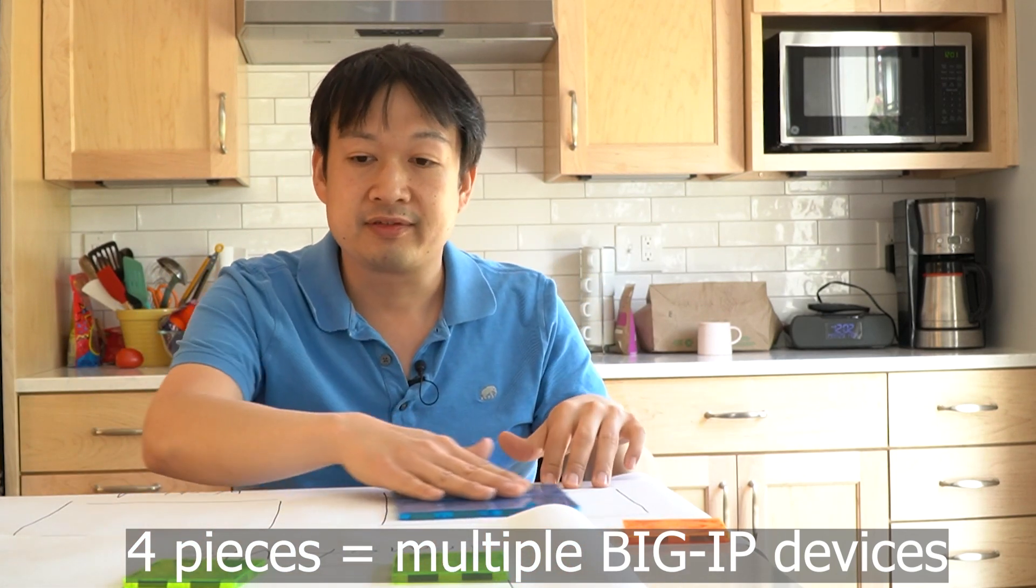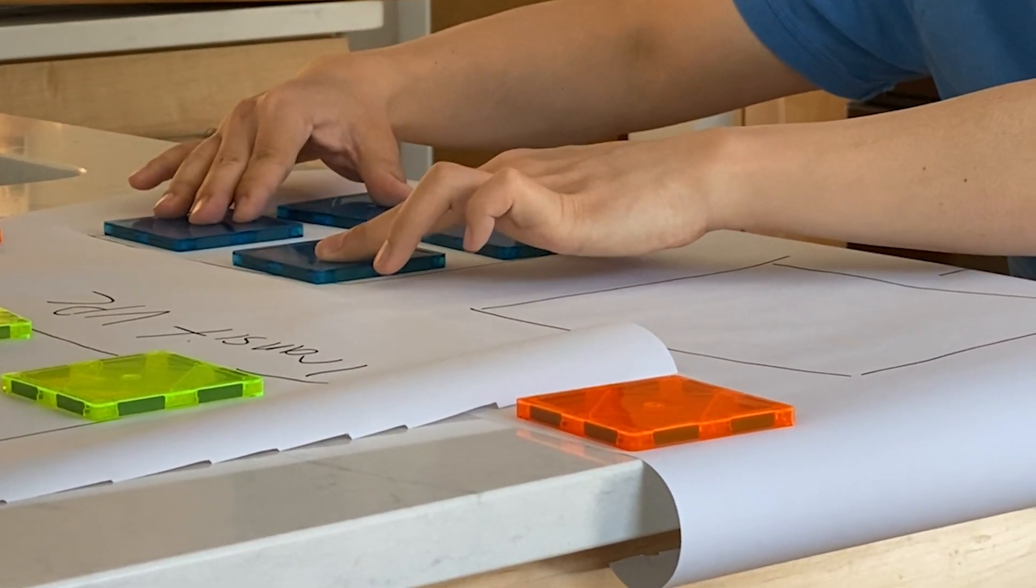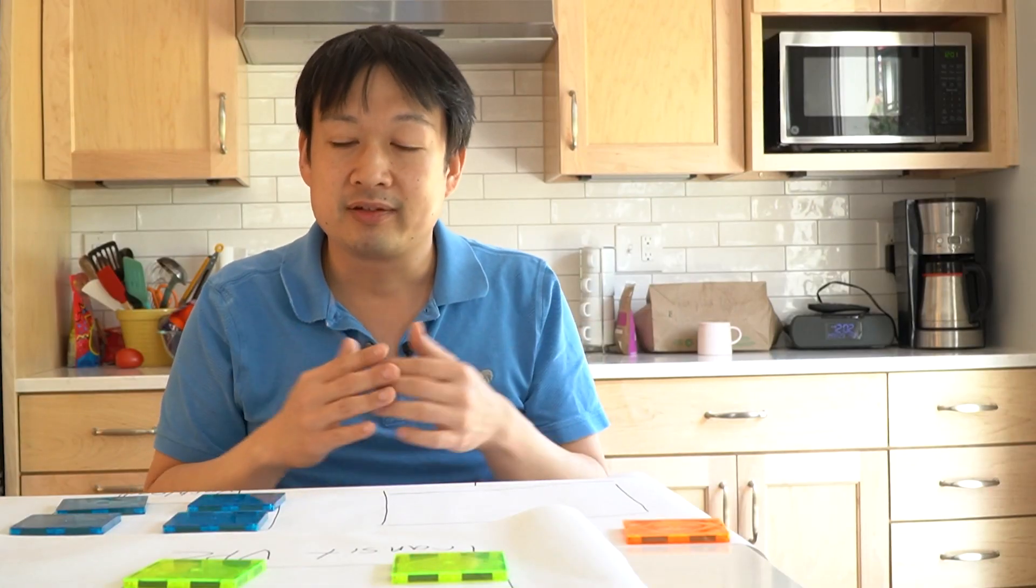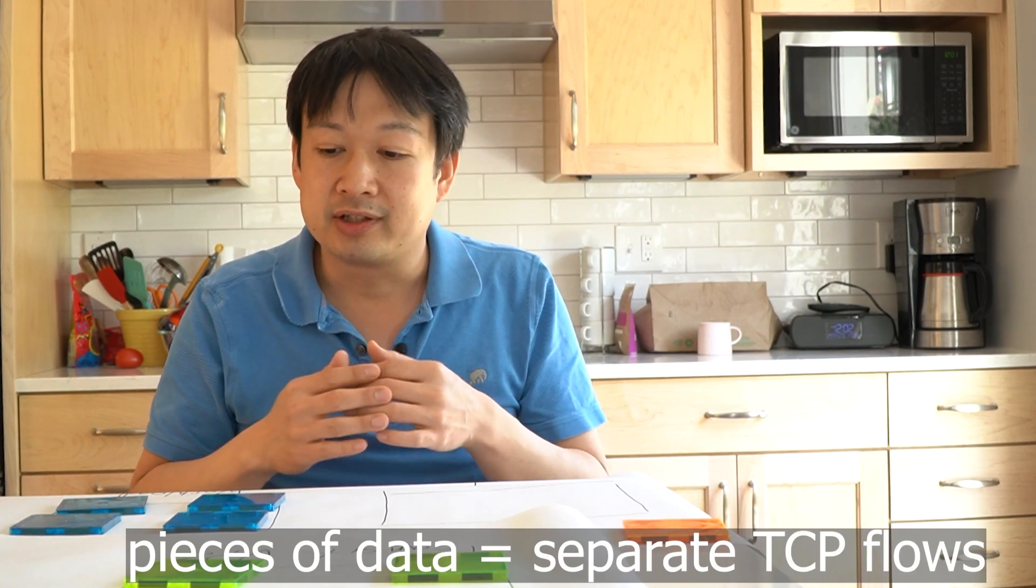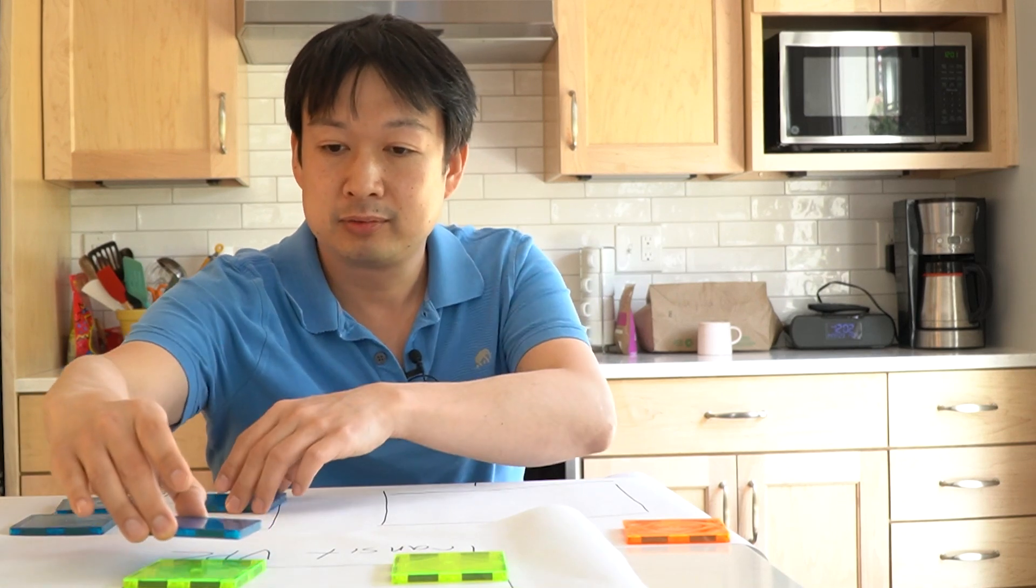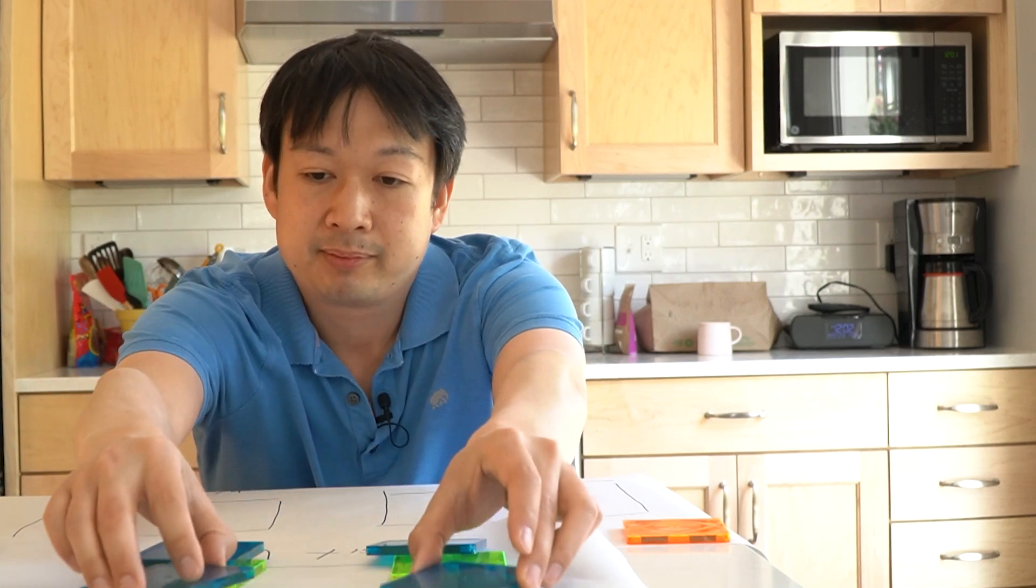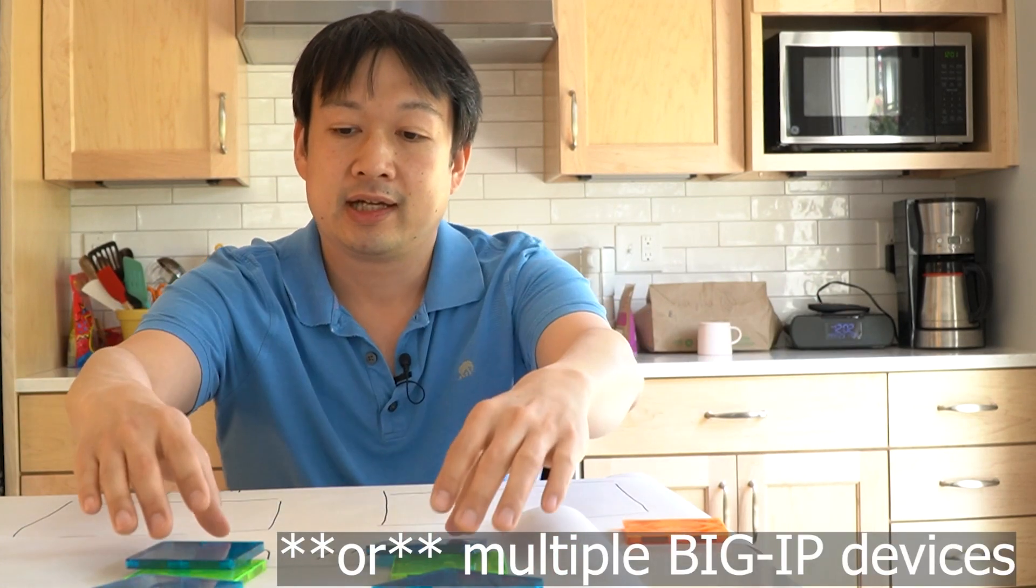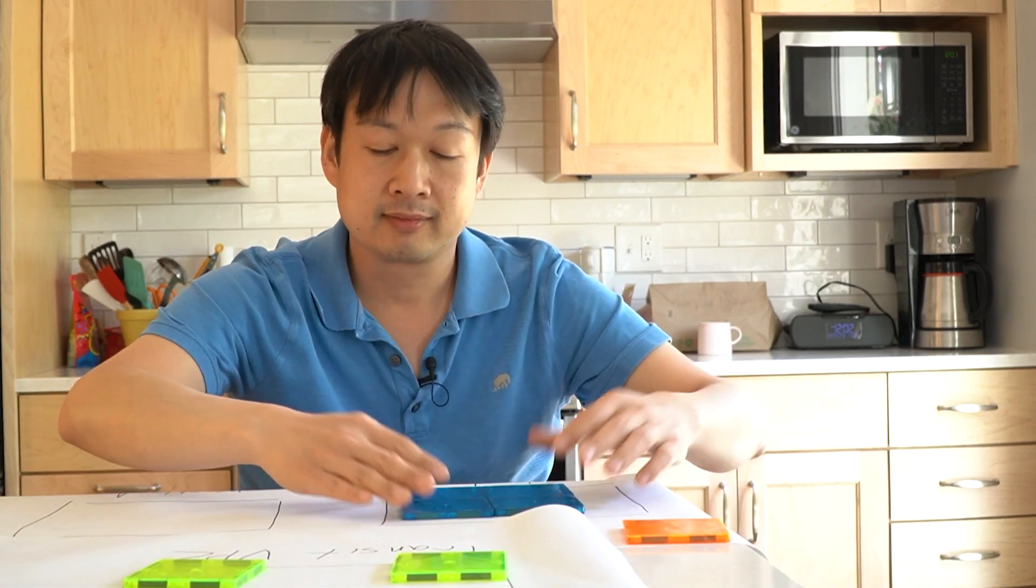So instead of sending all of our data through at once, we can also split it apart and we can send pieces of it. And this makes use of a GRE tunnel. And what that looks like is that each piece of data will go one at a time, and they might go over to a single Big IP device. And then that Big IP device will transfer it over to the client. And that is how we can use Transit Gateway Connect with a Big IP.